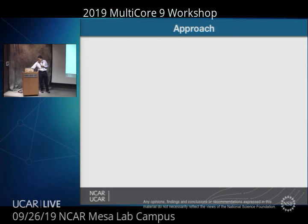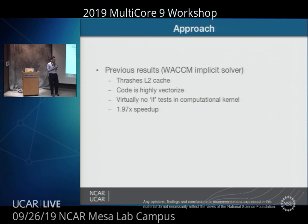Some previous results were done with the Wacom implicit solver — a small kernel cut out of the climate model. It really thrashes the L2 cache, is very highly vectorized, and has no if-tests in the computational kernel. So if this doesn't run at 2x performance something is wrong — luckily it does.